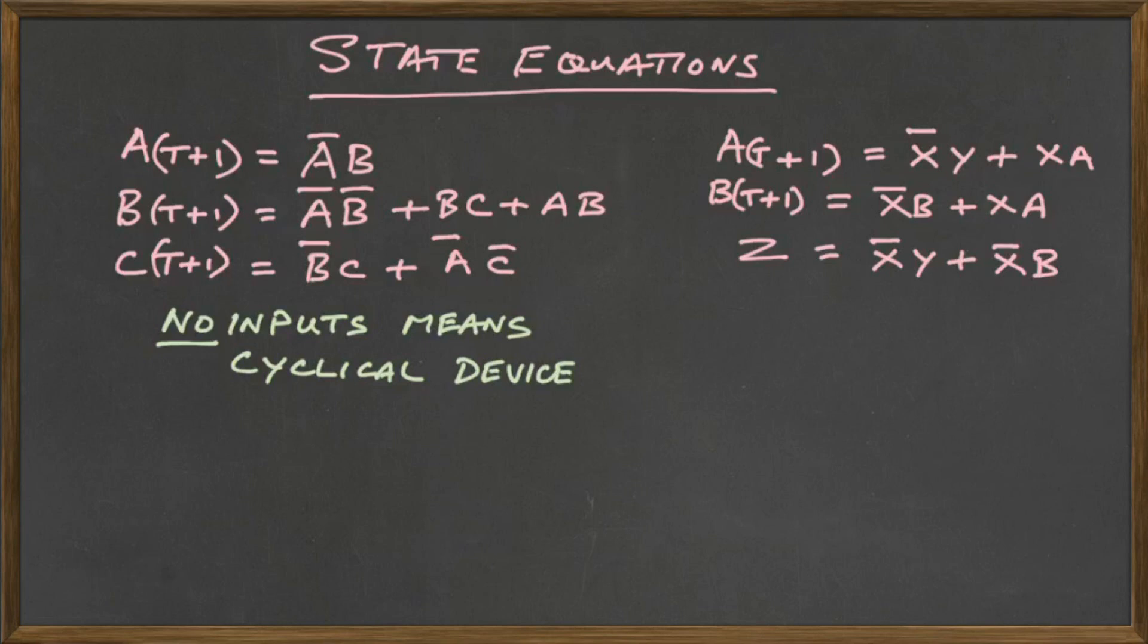Now let us look at the next one. We see that that has X and Y on the right hand side of the equal sign and not on the left. So the presence of letters on the right hand side of the equation which are not also on the left indicates that the device has inputs. Those variables are automatically inputs. And once we have inputs we can have non-cyclical behavior. It might have a cycle or it might not.